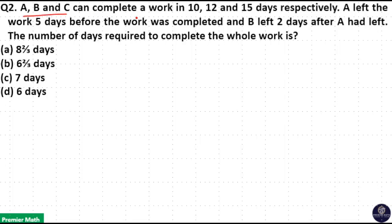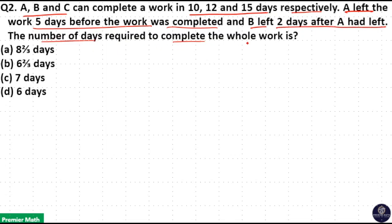A, B and C can complete a work in 10, 12 and 15 days respectively. A left the work 5 days before the work was completed and B left 2 days after A had left. The number of days required to complete the whole work is?